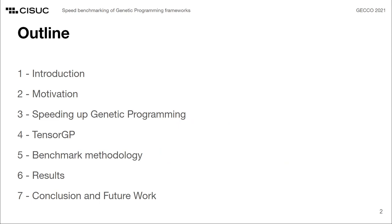This presentation is organized as follows. First, I'll provide a quick summary of what we aim to achieve as well as the main motivations behind the work being presented. Then, the two main approaches to speed up the fitness evaluation process in genetic programming are presented. We follow up by introducing TensorGP, a genetic programming engine that we developed and considered in our benchmarks. I'll also go over our methodology where the problem, considered frameworks, and standardization efforts are detailed. Then I'll discuss the results from our comparative study, and finally the main conclusions of our work are presented along with some pointers for future work.